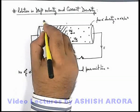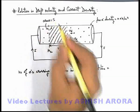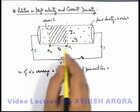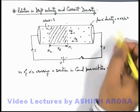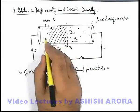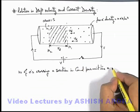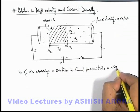If we consider the area of cross section of this conductor is S, this volume can be written as S*vd, and small n electrons are there per meter cube. So total number of electrons crossing a section in a unit time can be written as n*S*vd.